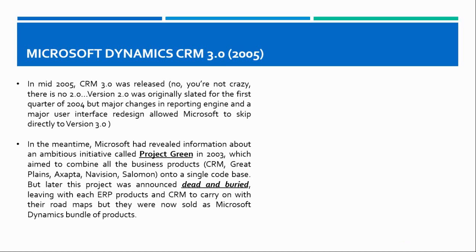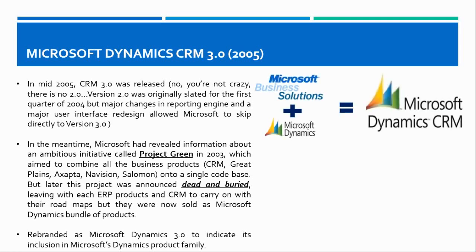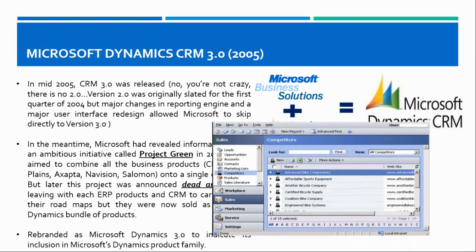After Project Green ended, these products were now sold as the Microsoft Dynamics bundle of products, so at least their product names were aligned. Microsoft rebranded the product to indicate its inclusion in the Microsoft Dynamics family. Earlier it was called Microsoft Business Solutions; from this point onward it became known as Microsoft Dynamics CRM.